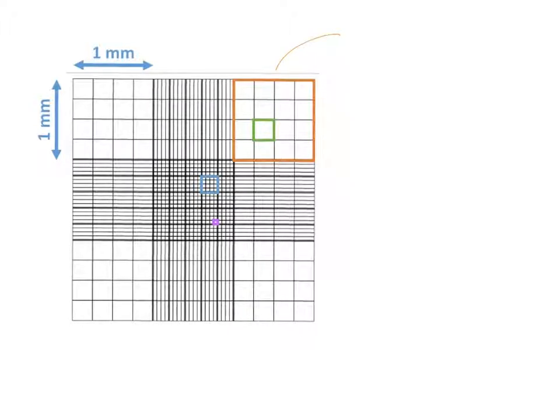If we do the first one, the orange one, that is clearly a one millimeter by one millimeter square. Therefore, that's going to have an area of one millimeter squared. That's fairly straightforward.